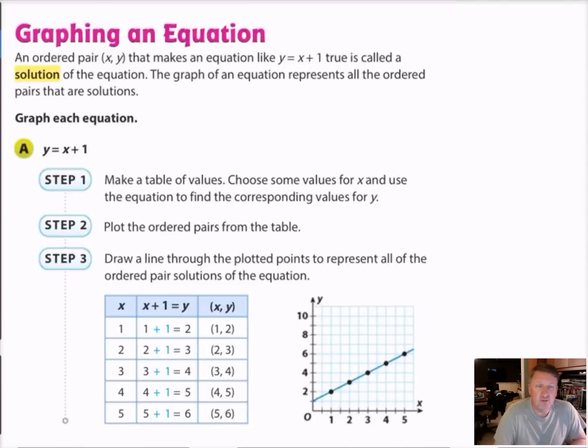So the next one says graphing an equation. An ordered pair, XY, that makes an equation like Y equals X plus 1 true is called a solution of an equation, and that's important. You probably should remember that. The graph of an equation represents all the ordered pairs that are solutions. So here we got the equation Y equals X plus 1. So probably the best way to do it is just to make a table of values. Then you choose some values for X and use the equation to find the corresponding values for Y. I've already kind of shown this in class. So then you take those ordered pairs, and you plot them from the table, and then you draw a line through the plotted points to represent all the ordered pairs for the solution.